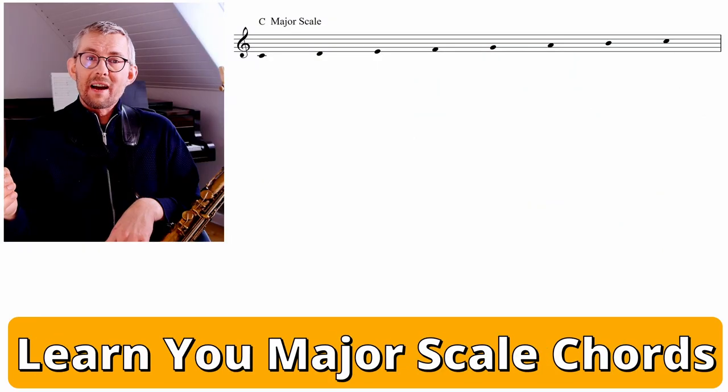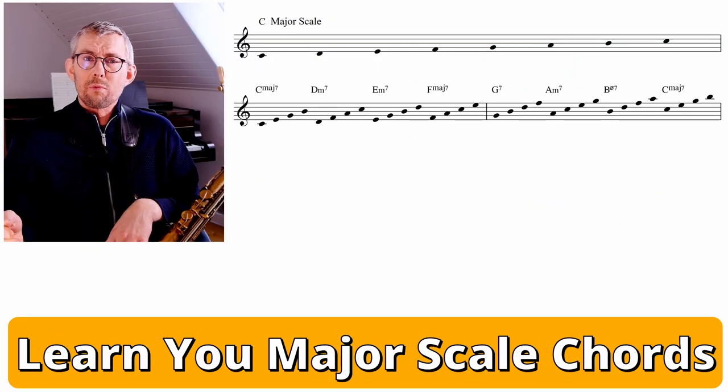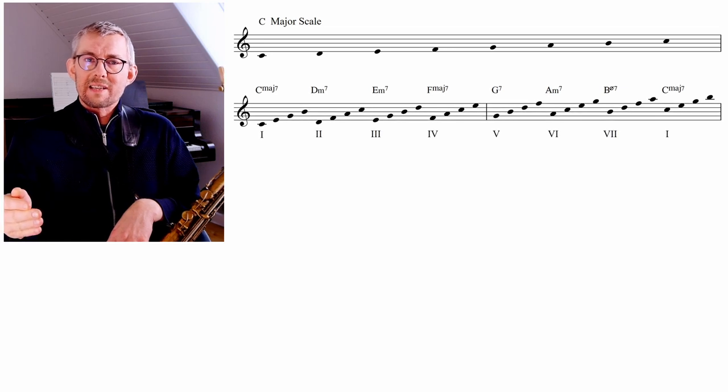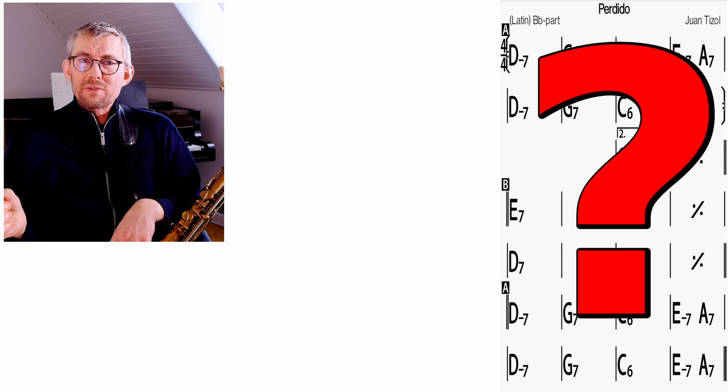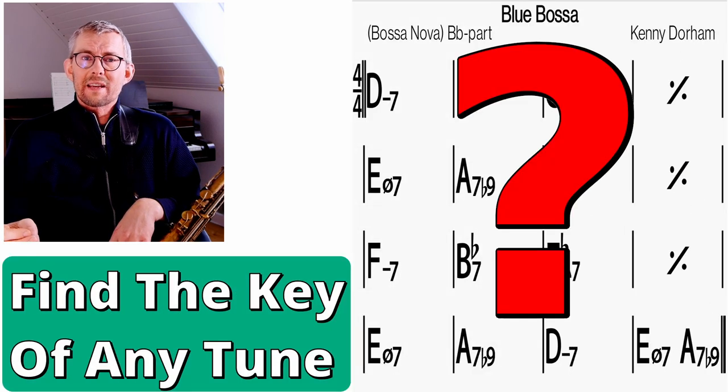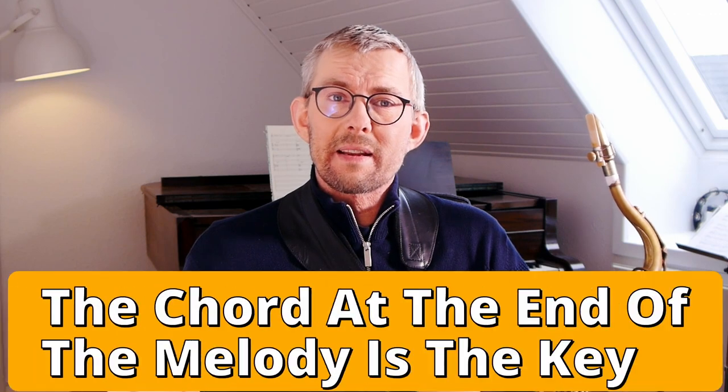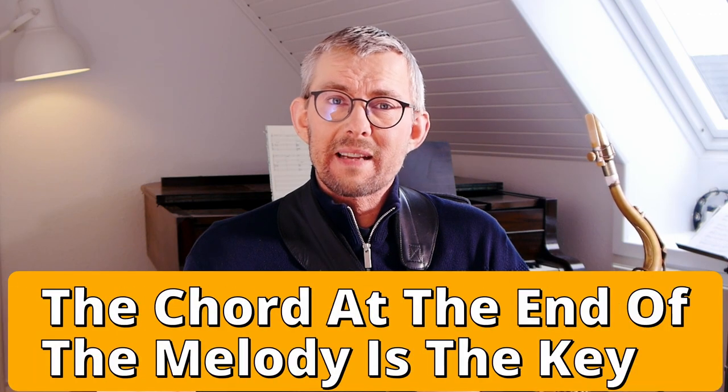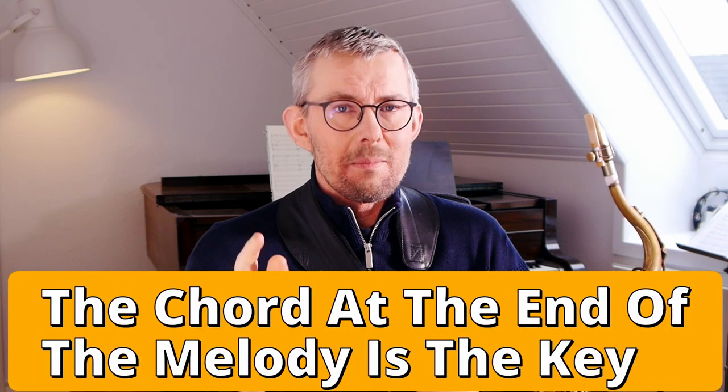The major scale can be divided into seventh chords. On every step of the scale you have one chord. And to make the analysis between keys much easier you give it the number between one and seven. And the absolute best way to understand your jazz standards more is finding out what key are they in. The first thing to do is play the melody and on the chord where the melody ends, that means this is the key mostly.